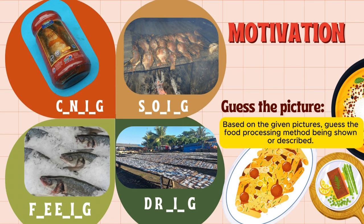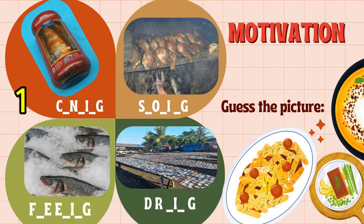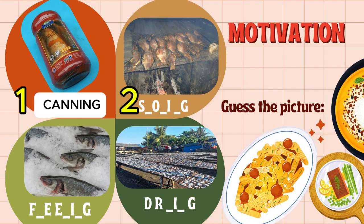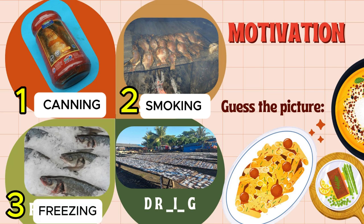Guess the picture challenge. Based on the given pictures, guess the food processing method being shown or described. Number one: canning. Number two: smoking. Number three: freezing. Number four: drying.